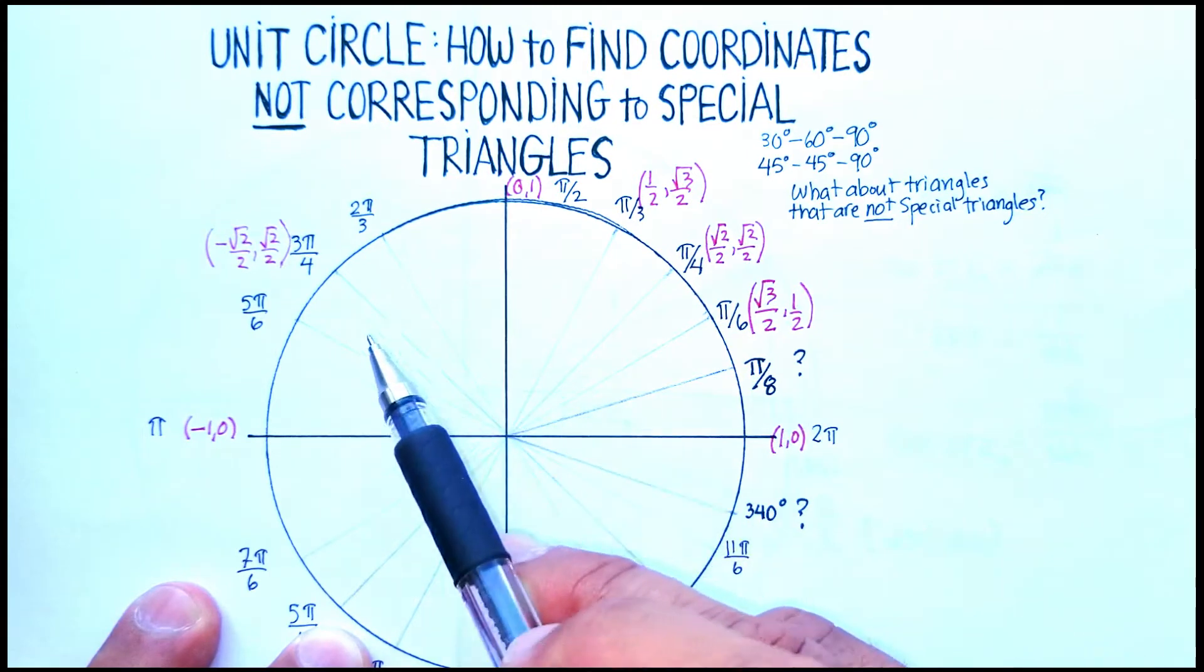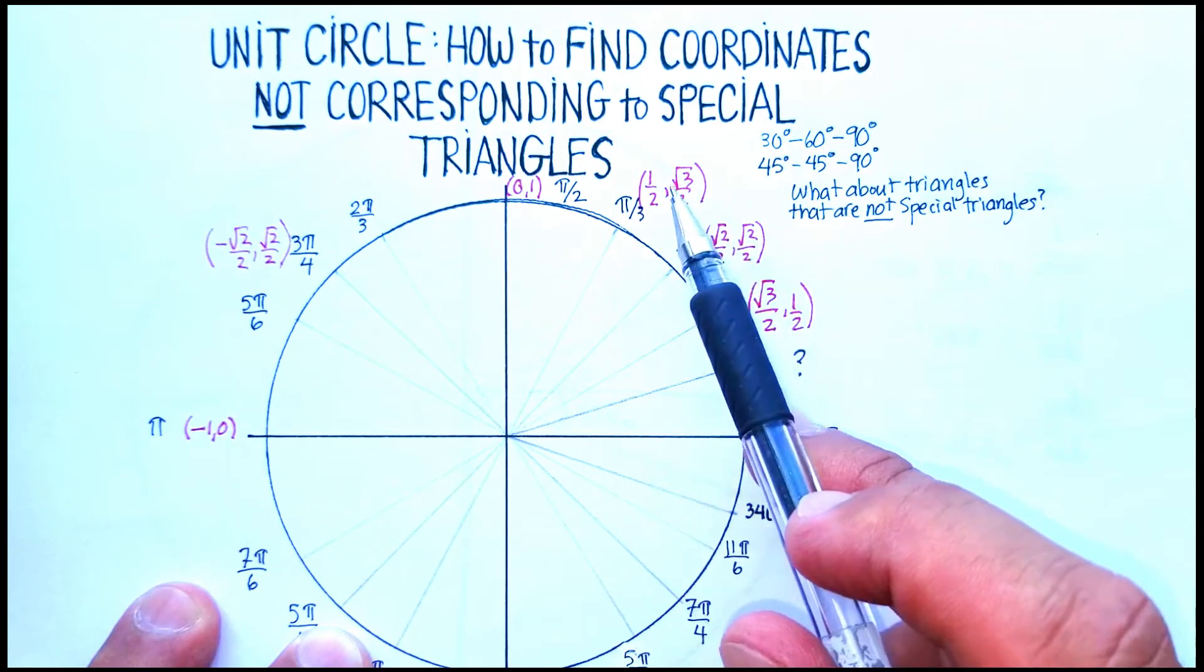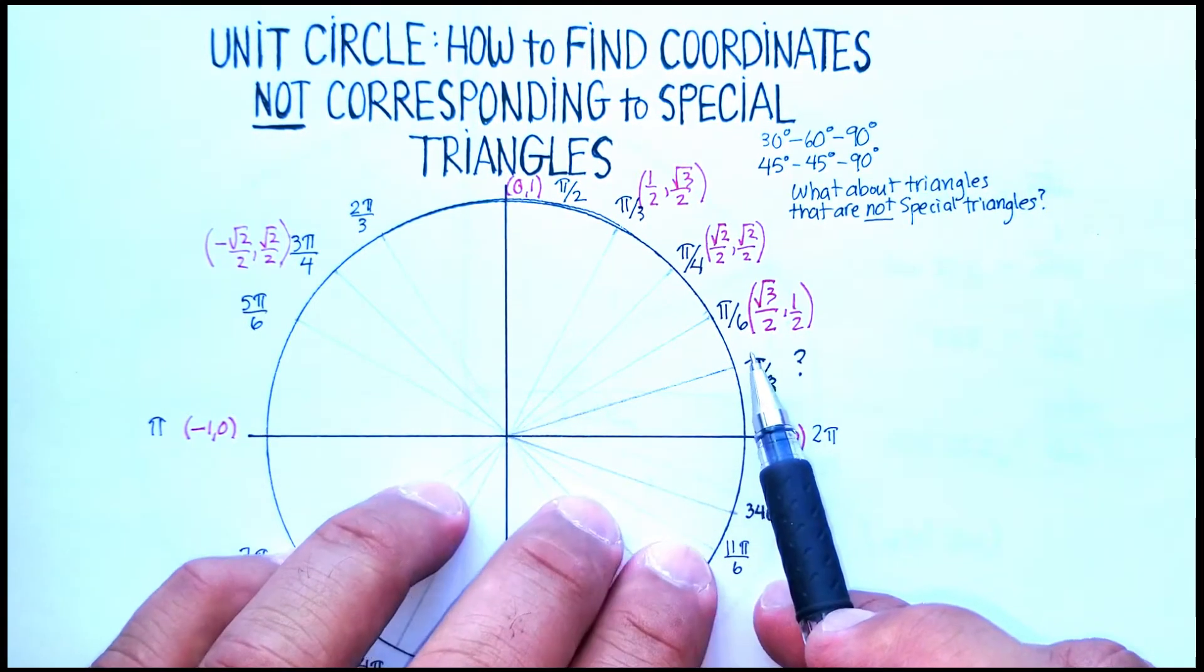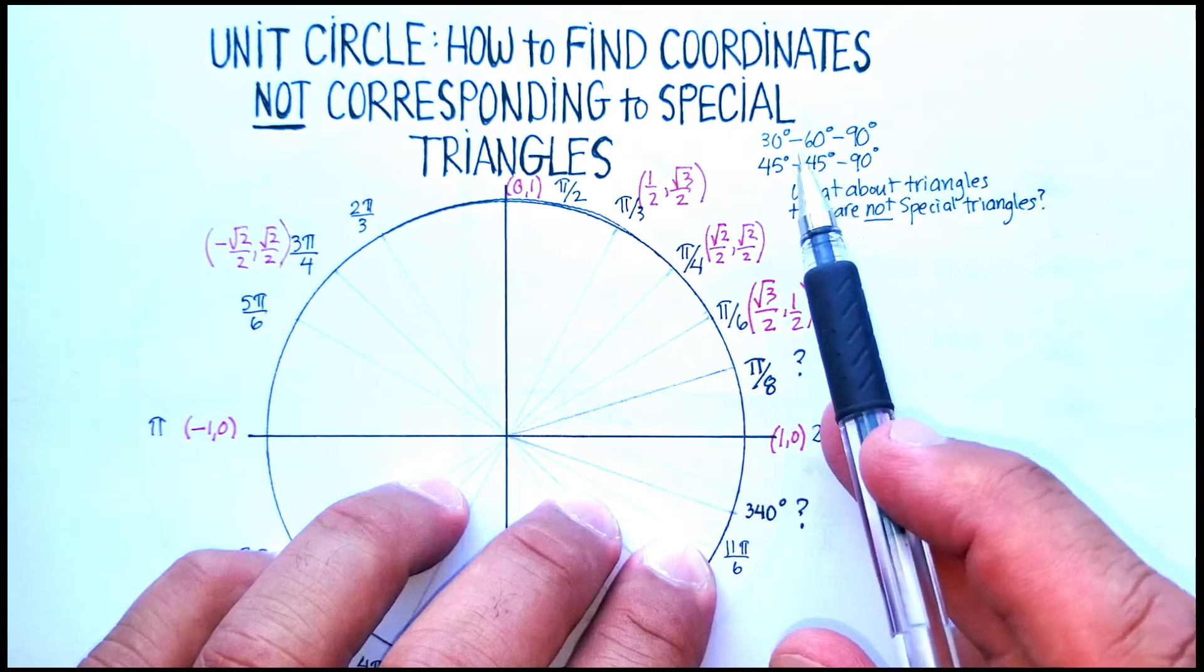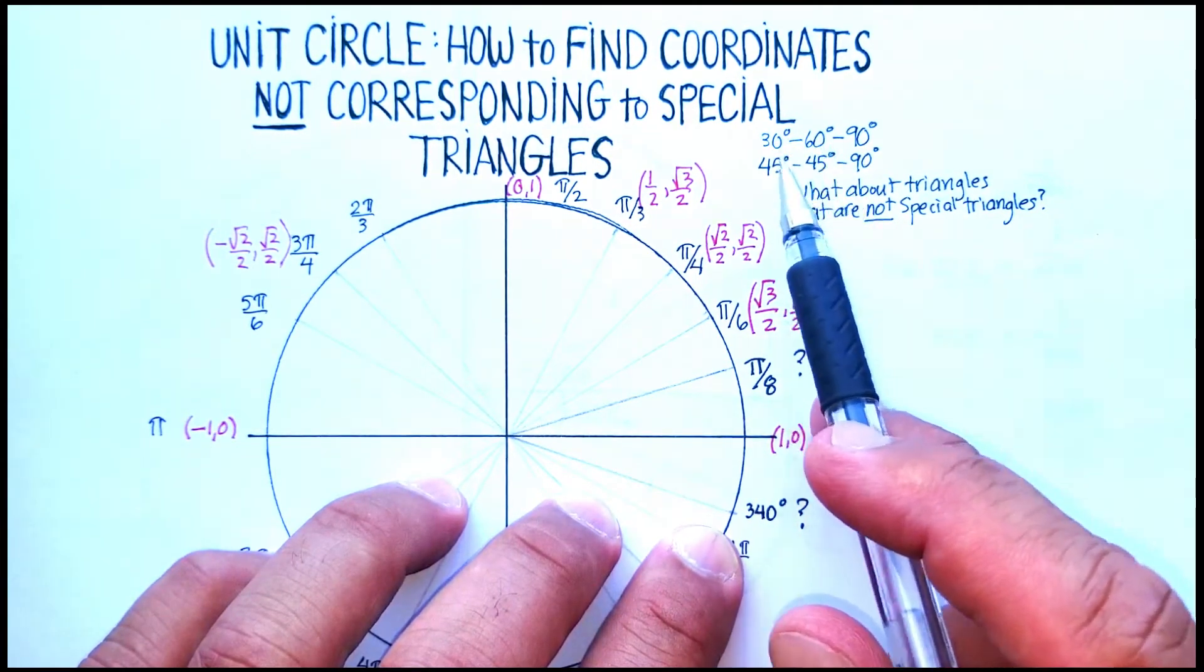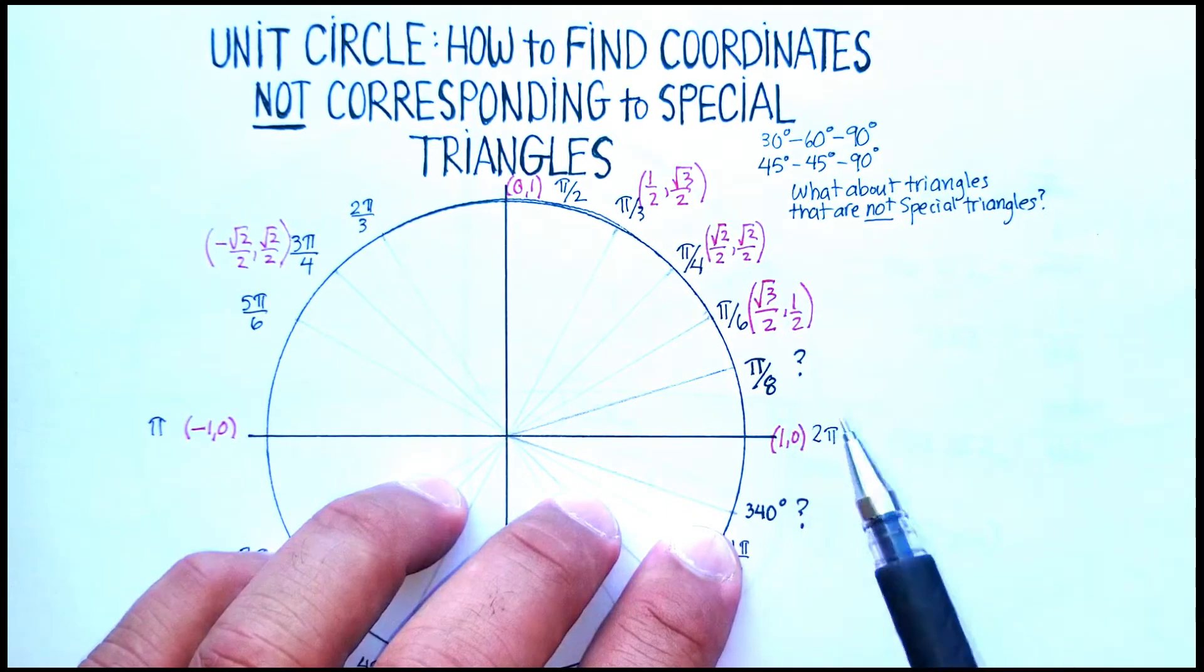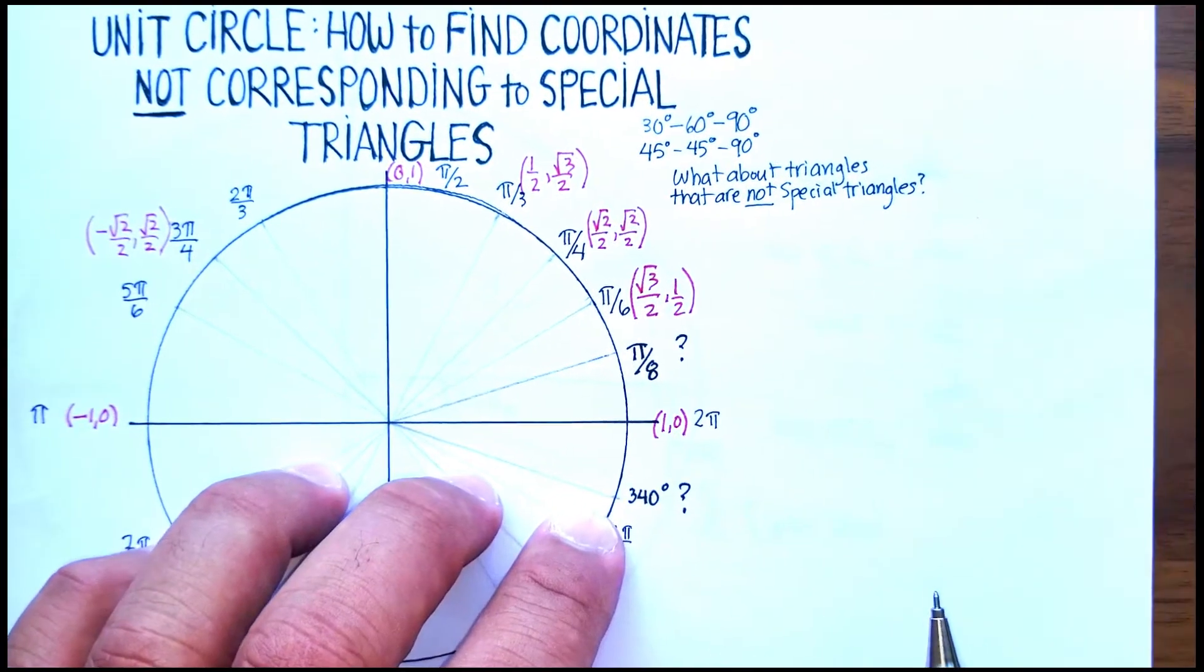They form these coordinates, and I showed you in a previous video how we found those coordinates. But what about for coordinates, for example, like π/8 that don't form a 30-60-90 or 45-45-90, or 340°, which again don't form either one of these two? How do we find the coordinates for that? That's what this particular video is going to be about.